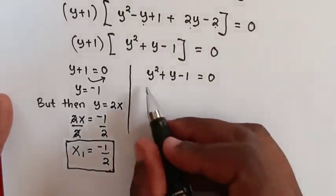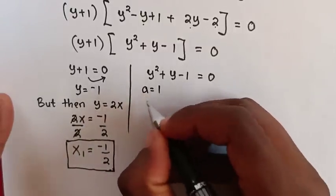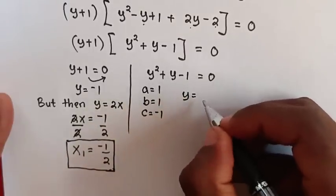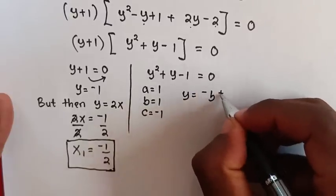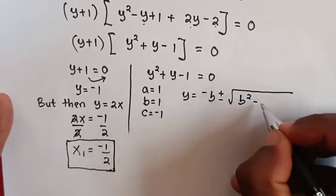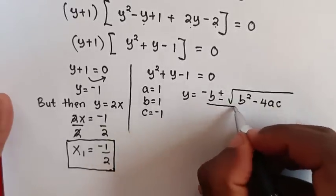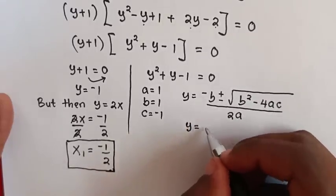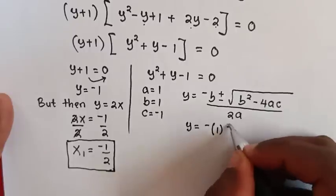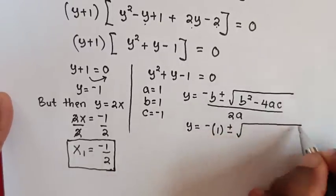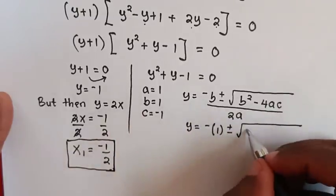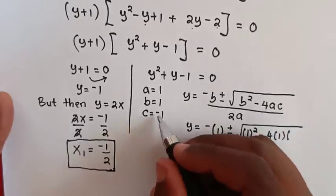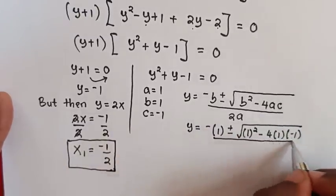And to solve the quadratic equation y squared plus y minus 1 equals 0, where a equals 1, b equals 1, and c equals negative 1. From the quadratic formula, y equals negative b plus or minus square root of b squared minus 4ac, all over 2a.